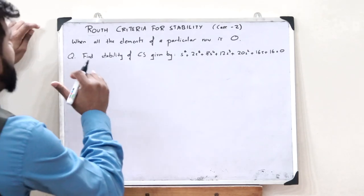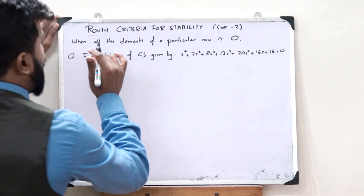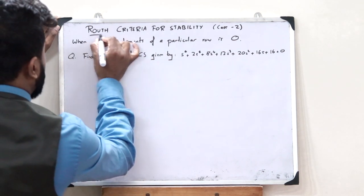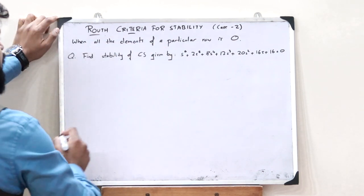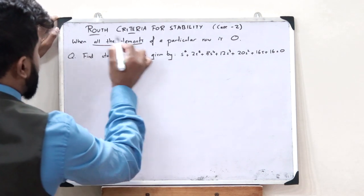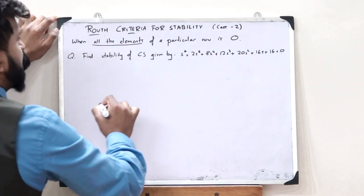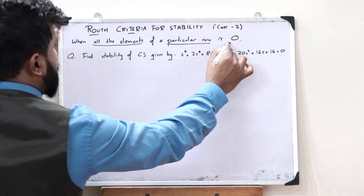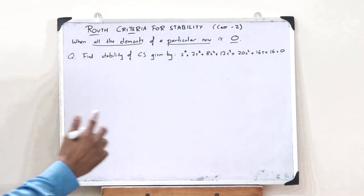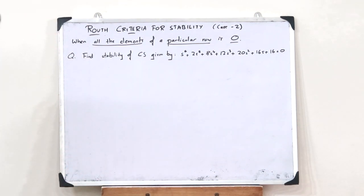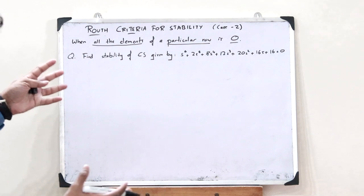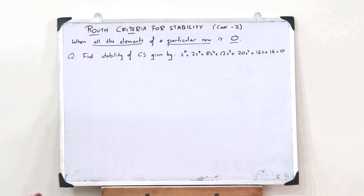The second special case for finding stability using the Routh criteria is when all the elements of a particular row are zero. That is the second special case while finding the stability of a control system using the Routh stability criteria.